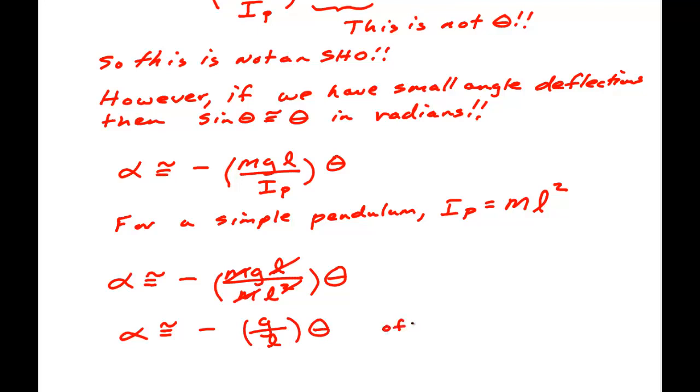And this is of the form alpha equal minus omega squared theta. Where that's angular acceleration, angular position, and a constant. So we've now found omega squared for this problem.